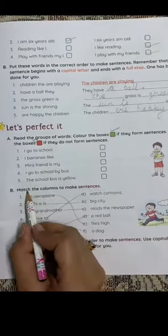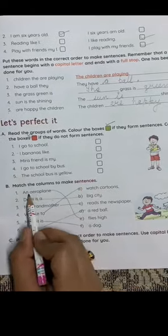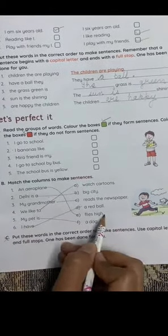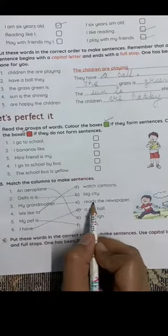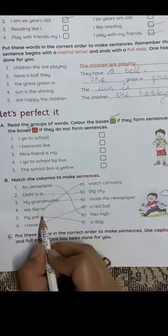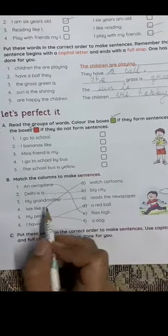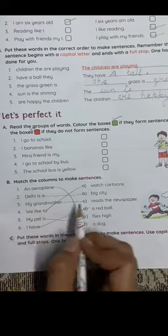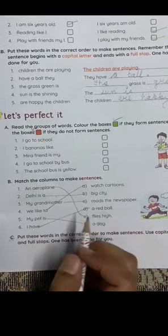Next, match the columns to make sentences. An aeroplane flies high, Delhi is big city, my grandmother reads the newspaper, we like to watch cartoons, my pet is a dog, I have a red ball. Match these numbers with the correct alphabets to complete the sentences to make the sentence. Column this to this.